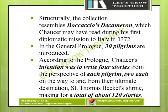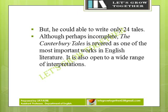In the general prologue, 30 pilgrims are introduced. According to the prologue, Chaucer's intention was to write four stories from the perspective of each pilgrim — two each on the way to and from their ultimate destination, St. Thomas Becket's Shrine — making for a total of about 120 stories. But he was only able to write 24 tales.